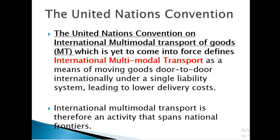The UN Convention on International Multimodal Transport defines international multimodal transport as a means of moving goods door to door internationally — that means the goods move from a factory in one country to a warehouse in another country — under a single liability system. A single liability means that only one operator is handling it, and that operator is responsible for anything that happens to the goods.